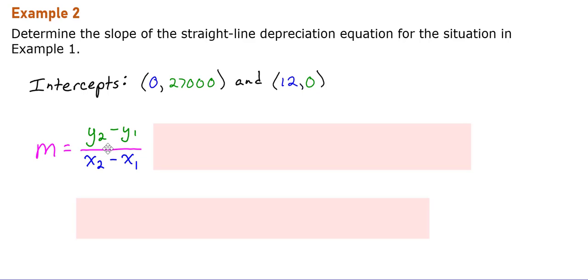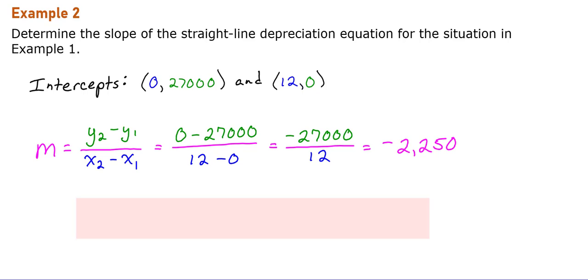Just like in algebra, put your y-values on top, so it would be 0 minus 27,000, and put your x-values on the bottom, so 12 minus 0. Make sure you're going in the same direction. Because our line is going down, we know we should end up with a negative amount. If we don't, then we did something wrong because our car will be devaluing over the years. This car depreciates at a rate of negative $2,250 per year.